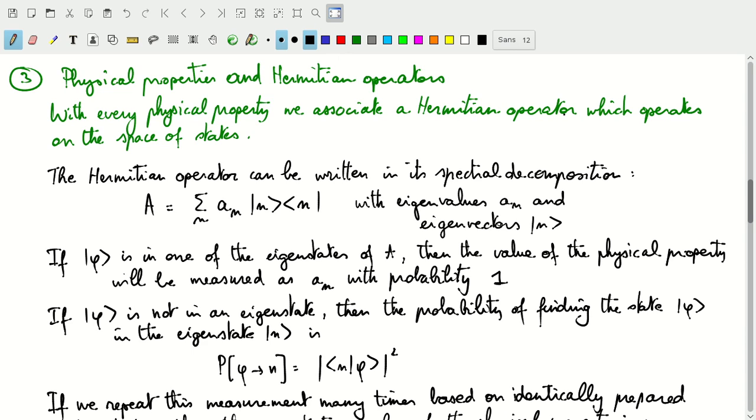So now we'll talk about the third postulate, which relates the physical properties and measurements that we make on quantum systems to Hermitian operators. The third postulate says that every physical property is associated with a Hermitian operator, and that Hermitian operator operates on the space of states.